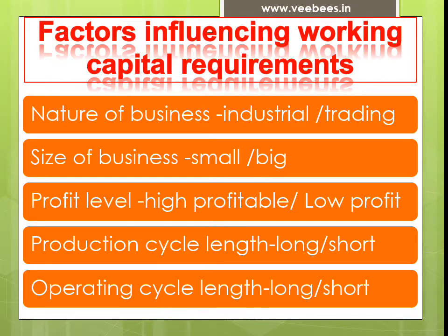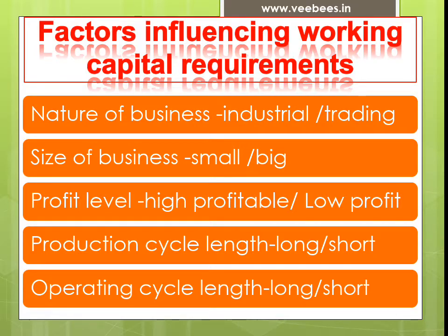The next area is operating cycle length. The operating cycle is the time taken to convert raw materials into work in progress, work in progress into finished goods, finished goods into sales, sales into accounts receivable, and accounts receivable into cash — that is, the cycle of converting cash back into cash. If the length is long, meaning if it is taking more time, they require more working capital as compared to a shorter operating cycle firm.